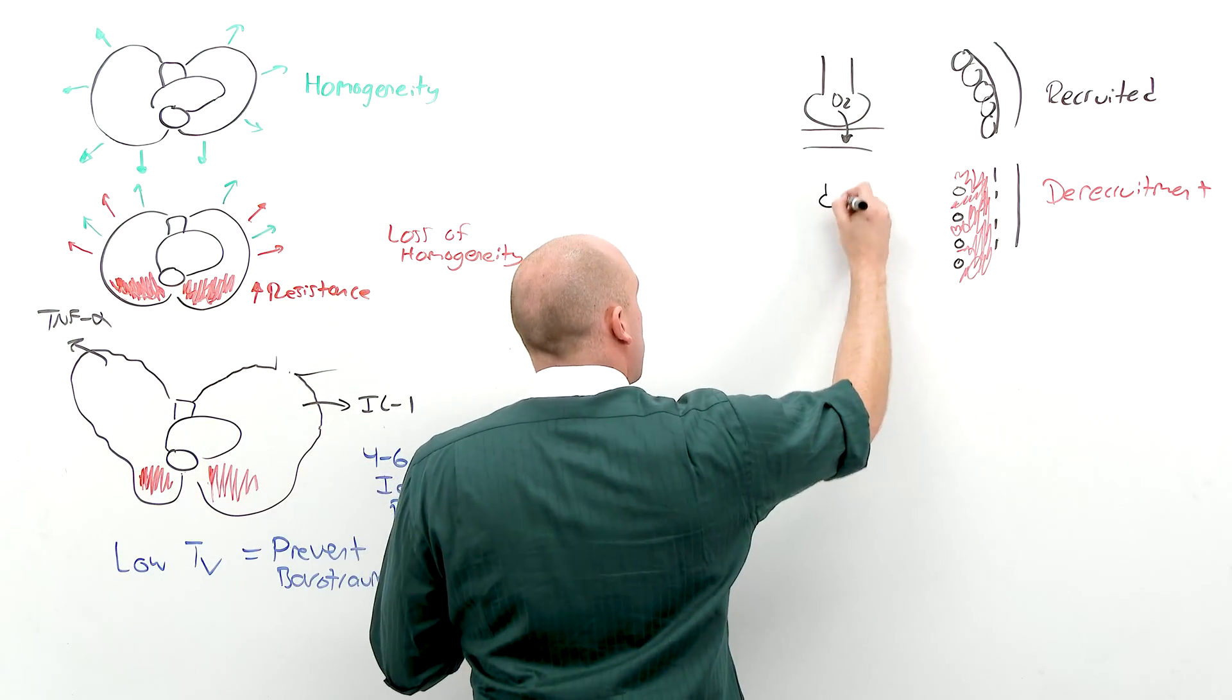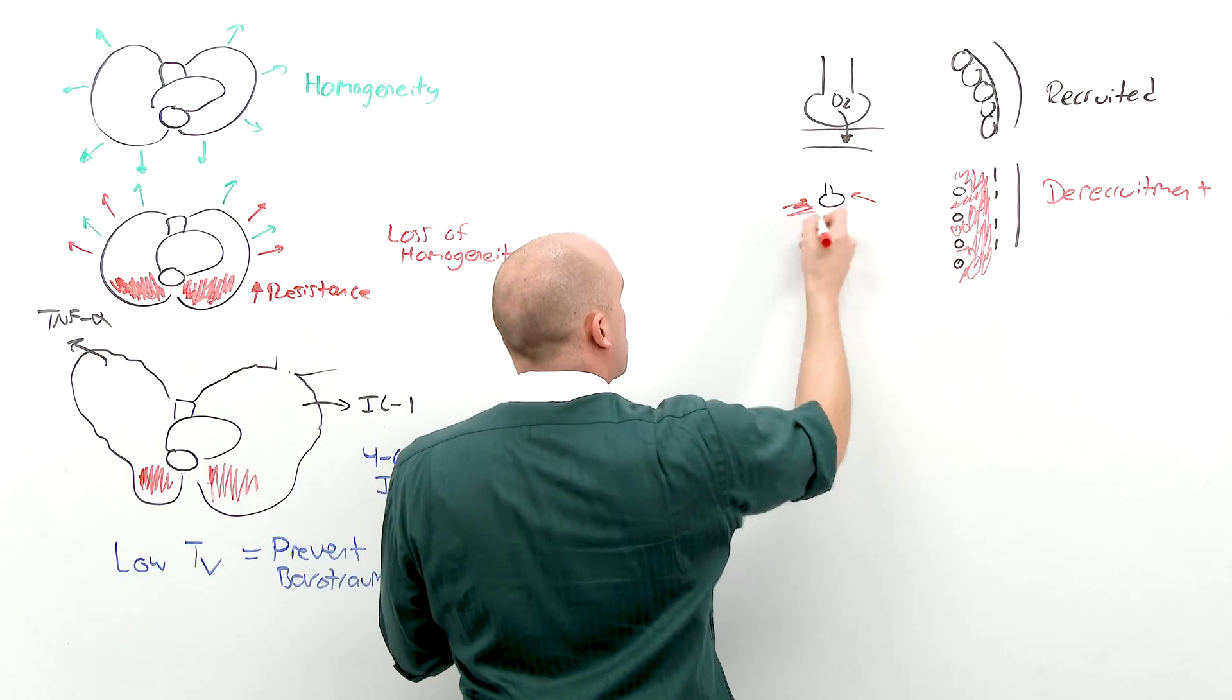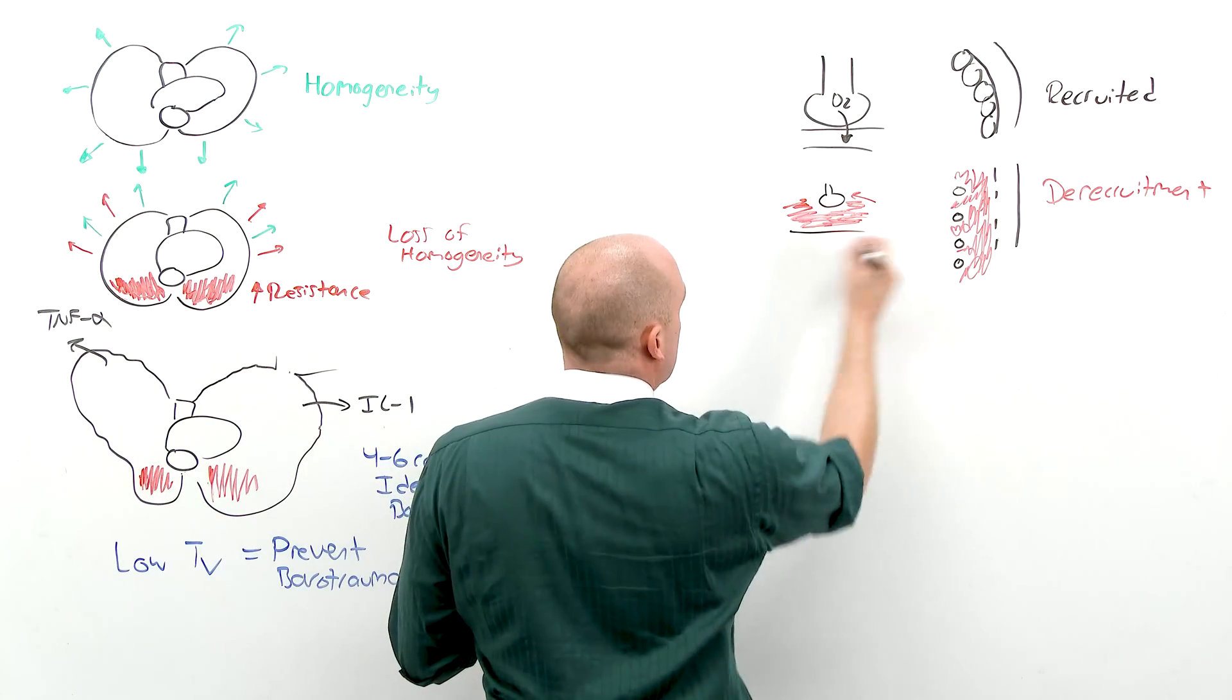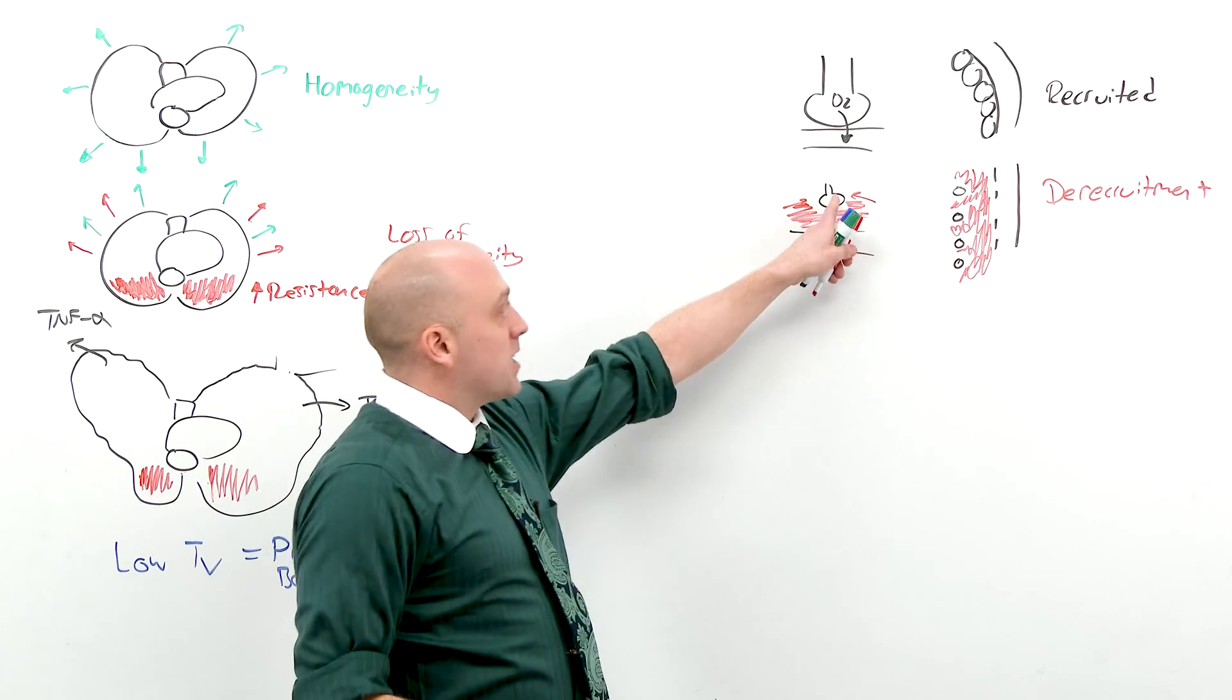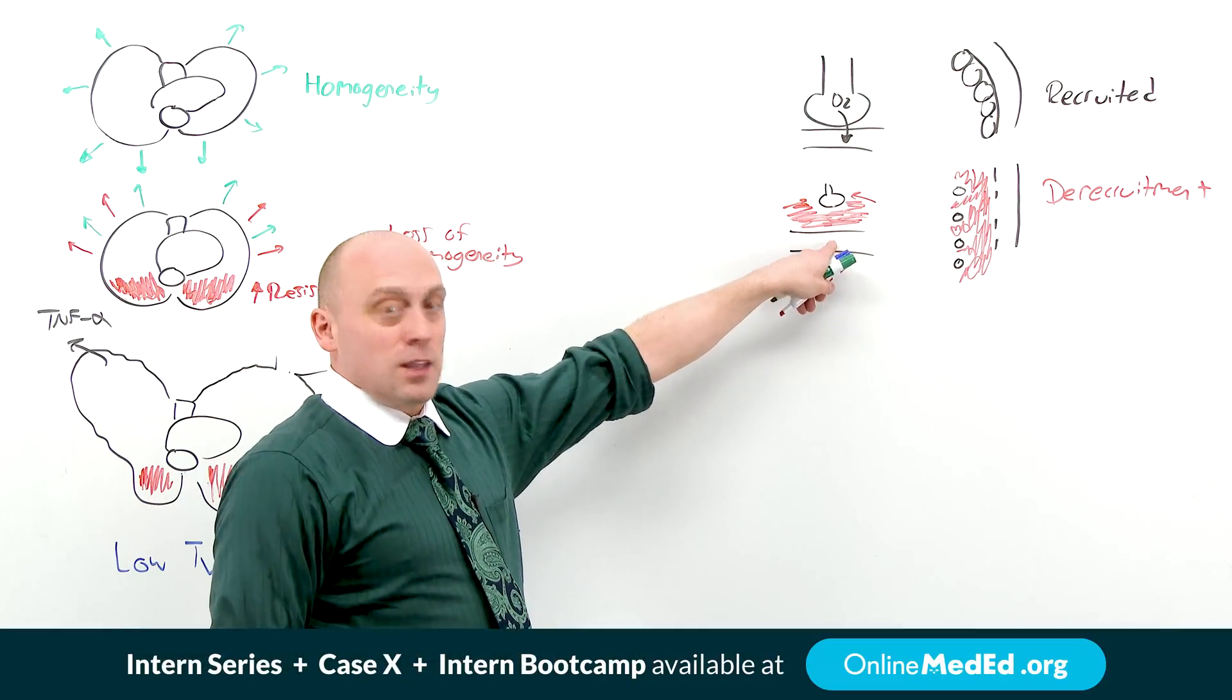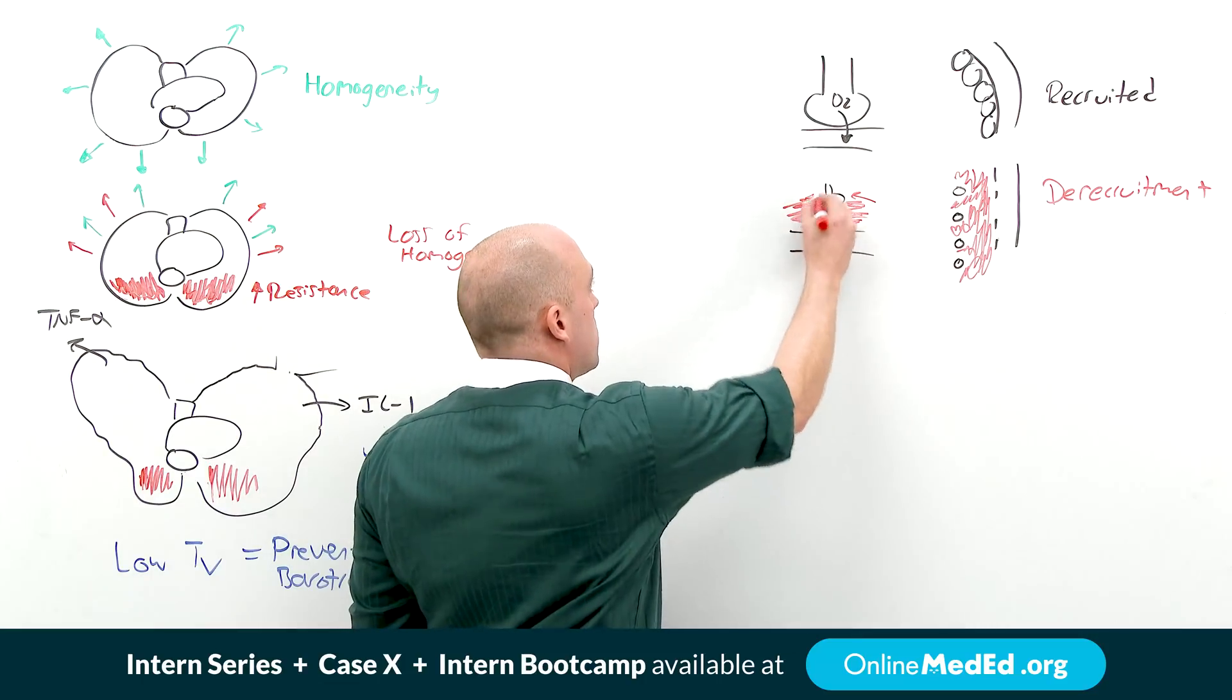Because the force of the fluid pushes on the alveolus, there is now both decreased surface area and an increased diffusion distance. Since oxygen is diffusion limited, oxygen is not going to be able to get into the bloodstream very well. Likewise, once the alveolus is collapsed, once it's derecruited, it won't reopen. Which contributes to the increased resistance and the lungs being like concrete.